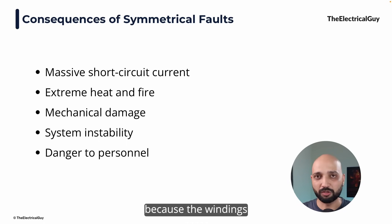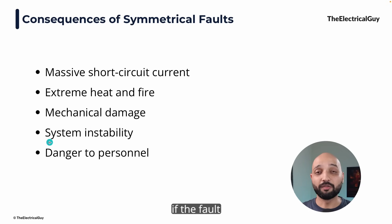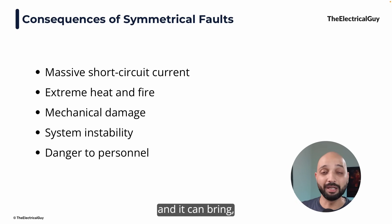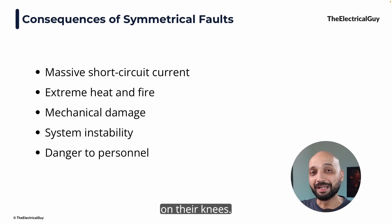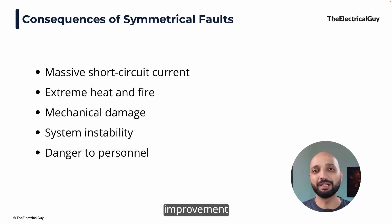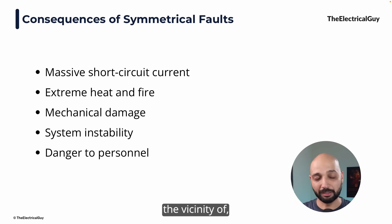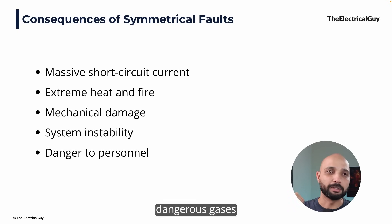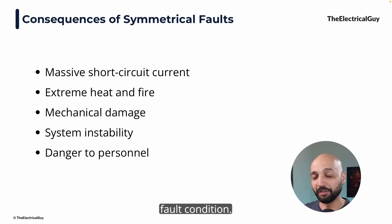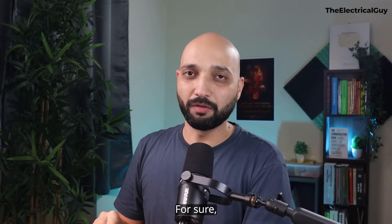The electromagnetic forces can damage generators and transformers, because the windings will experience a lot of force. Of course, if the fault is not cleared in time, it may cascade and create complete instability in the system, bringing even the strongest power system to its knees. Thanks to advanced protective systems and improvements in circuit breakers, these faults can be tackled. It can also create danger to personnel — if persons are working in the vicinity of the fault, it can create a flash, dangerous gases, and many other hazards.